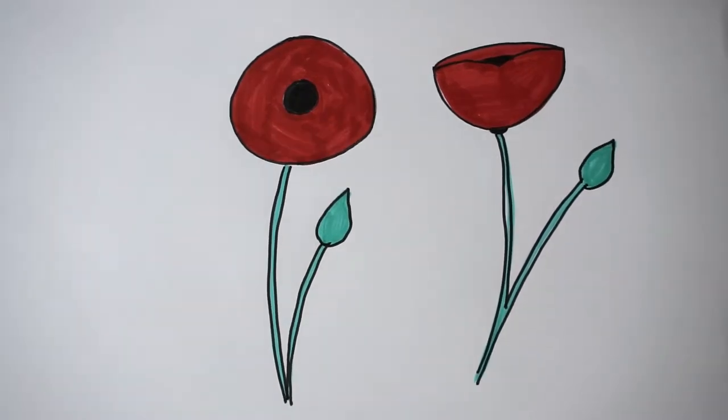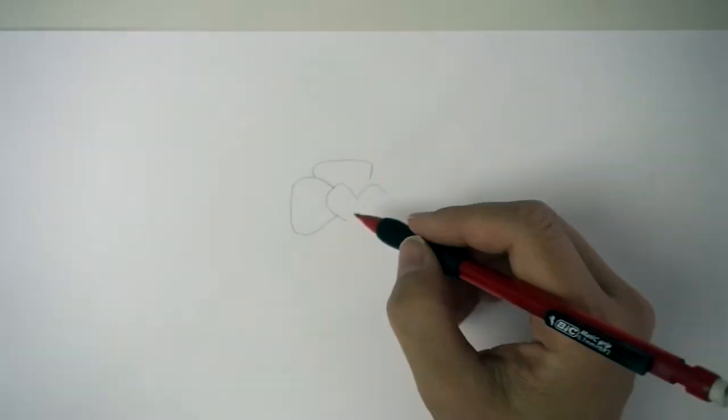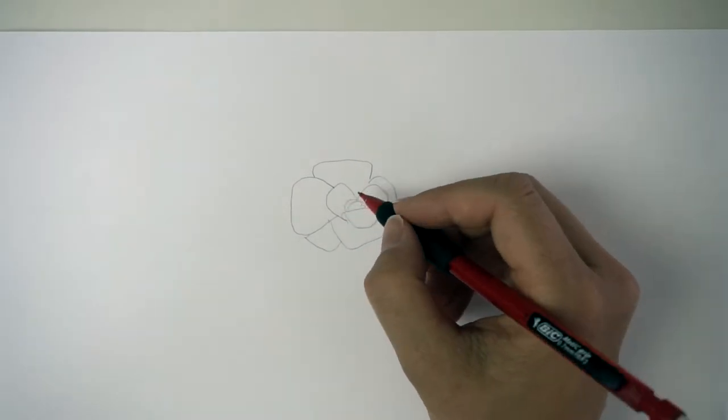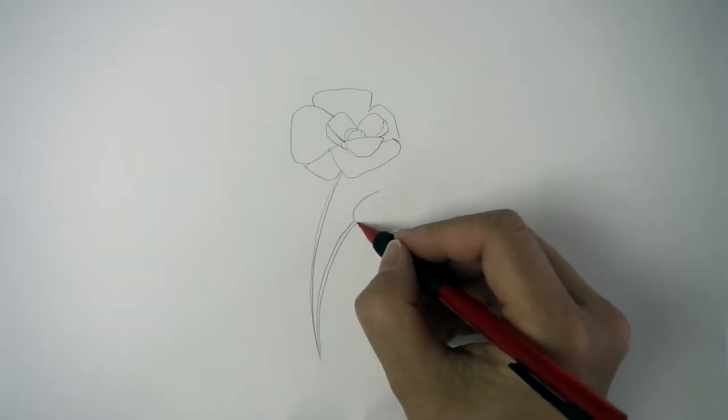Some stems will just be green like this one and some have more details. So that was the first version. Now we go to the second one and here I actually do some petals, some bigger ones on the outside and smaller ones in the middle to make some dimensions.